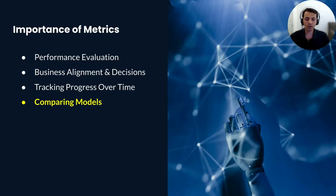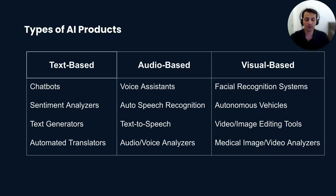We've learned about the importance of metrics, but there are many different ways of categorizing AI products. For the purpose of this webinar, specifically on the topic of metrics, I categorize AI products into text, audio, and visual-based AI products.